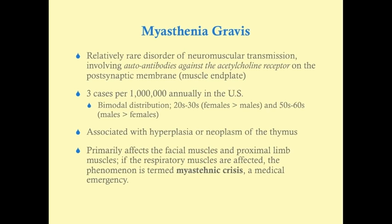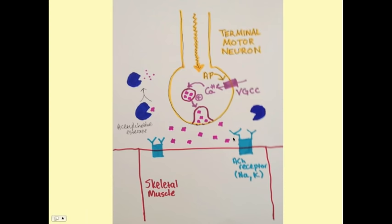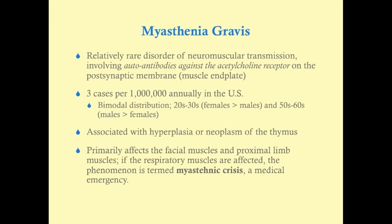Myasthenia gravis is a relatively rare disorder of neuromuscular transmission involving autoantibodies against the acetylcholine receptor on the postsynaptic membrane. These antibodies competitively inhibit acetylcholine at the receptor, blocking muscle contraction and resulting in weakness. It is very rare — about three cases per million annually in the US — with a bimodal distribution: females more than males in the 20s to 30s, often associated with other autoimmune disorders like Sjögren's syndrome, lupus, and RA.